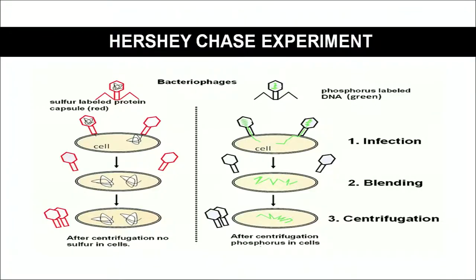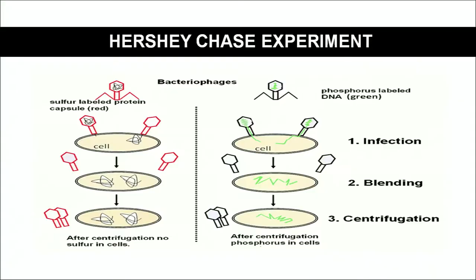Hershey grew bacteriophages on a medium containing radioactive sulfur, and in another set, on a medium containing radioactive phosphorus. The reason: proteins are made up of carbon, hydrogen, oxygen, nitrogen, and some amino acids like methionine contain sulfur. Sulfur is not found in DNA but is found in some proteins. Phosphorus, on the other hand, is not found in proteins — it is a component of DNA.